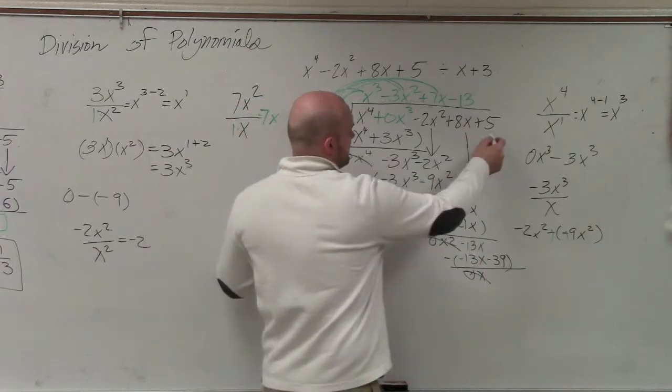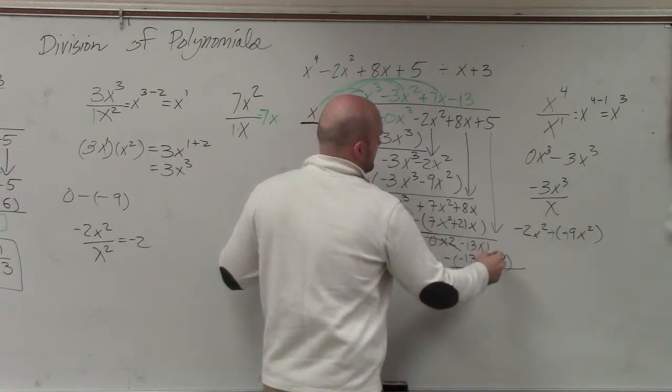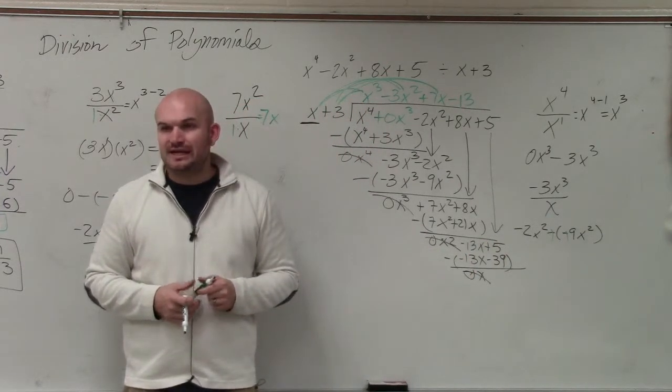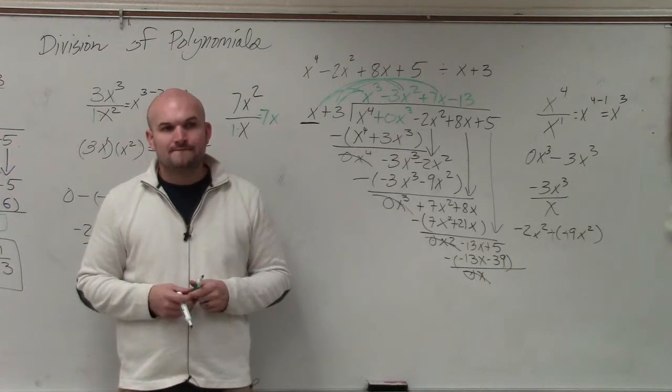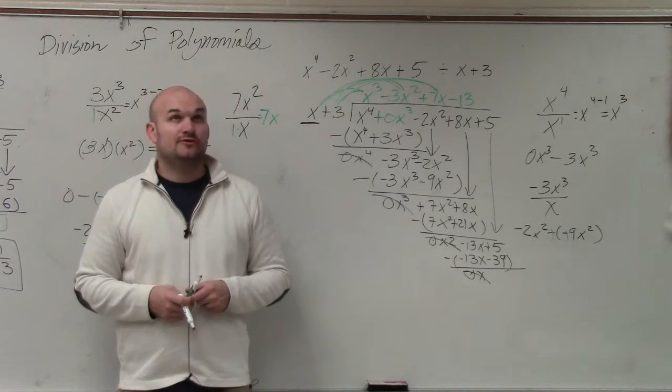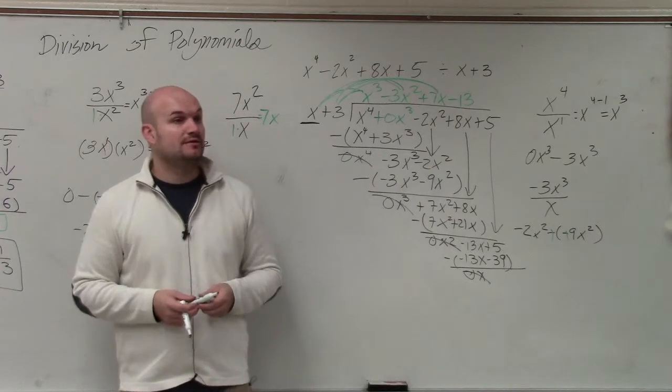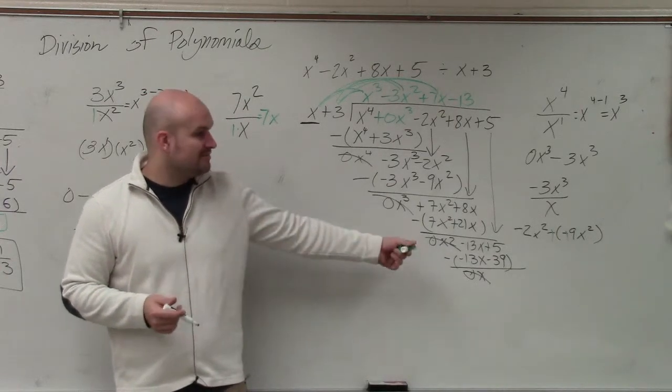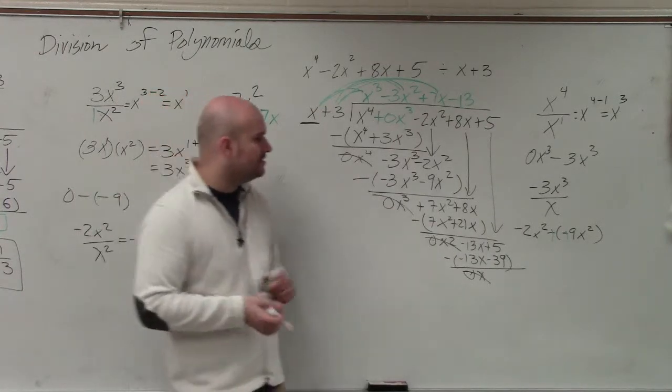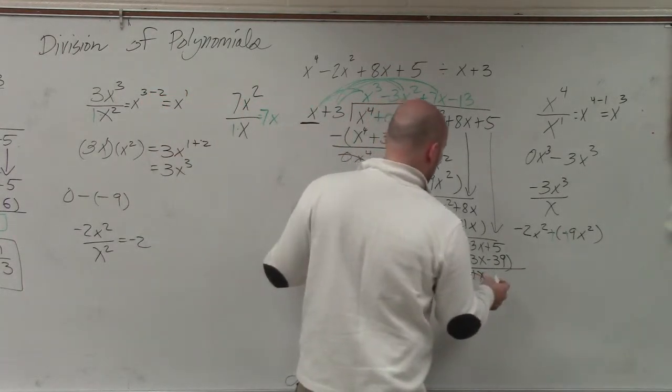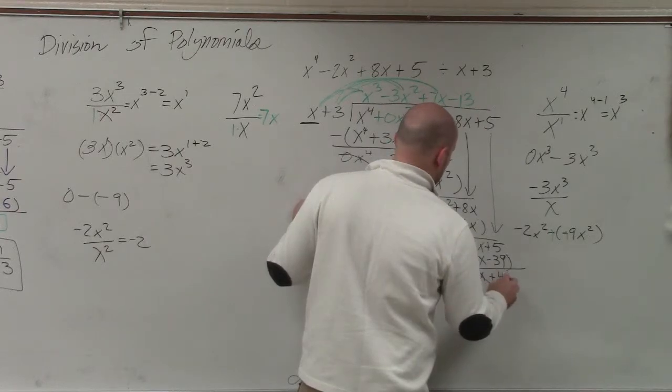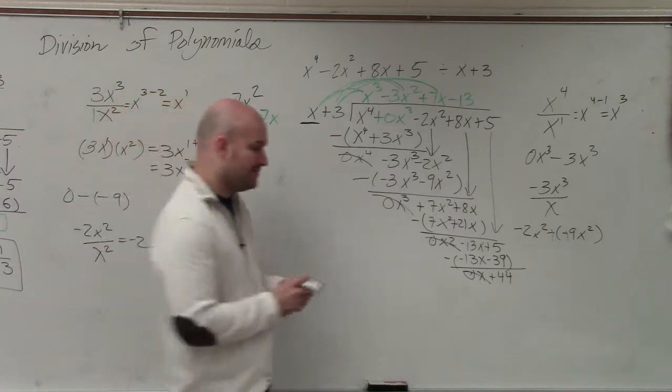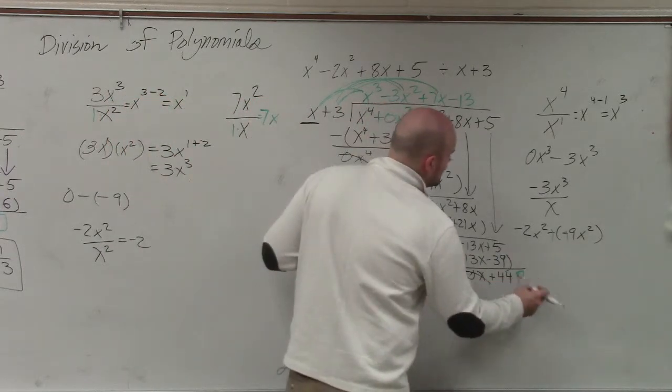Then, oh, we need to bring down the 5. So 5 minus negative 39 is 44. If you have $5 and you owe me, you have $5. Oh, wait, you borrow. So it's going to be minus a negative. So it's going to be adding, right? So that's going to be 44. Does x divide into 44? No. So guess what? That is now your remainder.